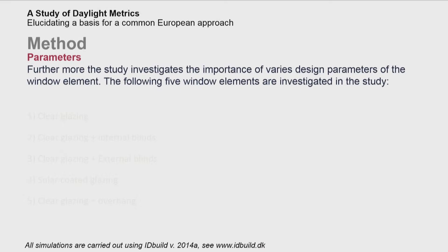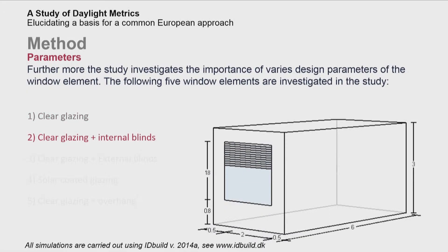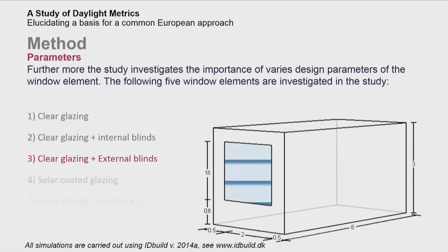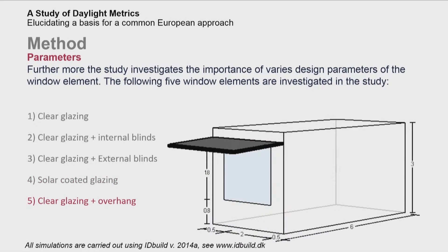To investigate the sensitivity of the four metrics, the study involves a parametric analysis based on a standard room, investigating the effect on each metric caused by different window elements: the standard room with normal clear glazing, with clear glazing and internal blinds, with clear glazing and external blinds, with solar-coated glazing, and with clear glazing and an overhang.